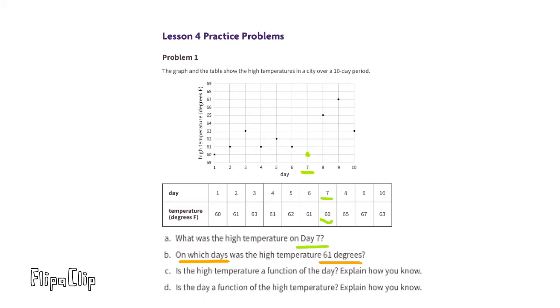B. On which days was the high temperature 61 degrees? Take a look at the graph. You can see that 61 degrees occurred on day 2, day 4, and day 6. We can also look at the table. On day 2, day 4, and day 6, the temperature was 61 degrees Fahrenheit.